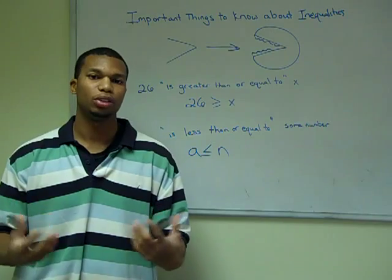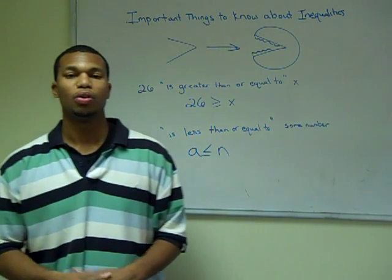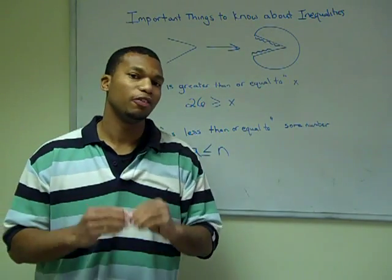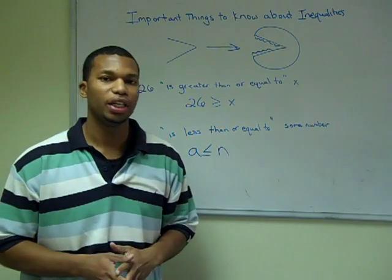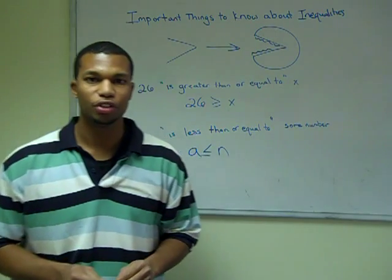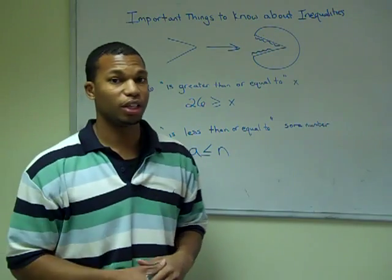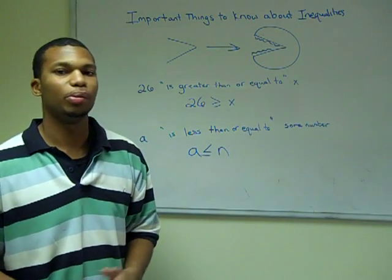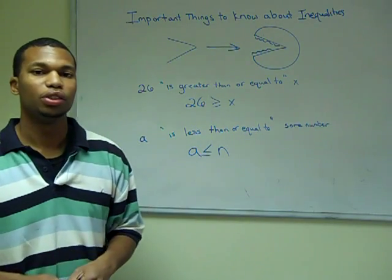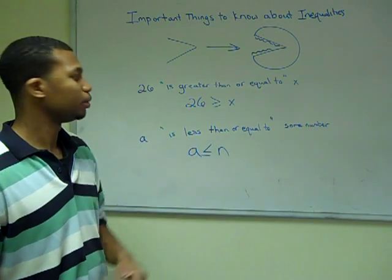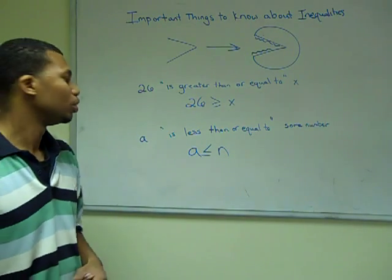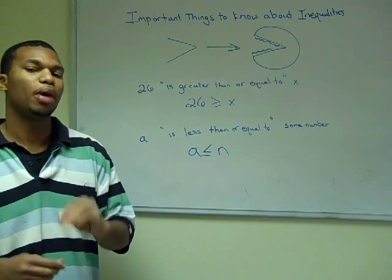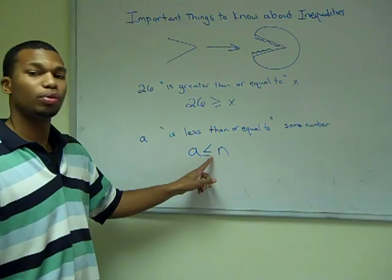Next we're going to look at how to place the mouth of the inequality. All of those symbols have a sort of mouth character. The mouth is always going to eat the greatest amount. It doesn't matter how the wording of the inequality is phrased — the mouth always points to the greatest amount. For example, if we say 26 is greater than or equal to X, we're suggesting 26 is the largest number, so the mouth points to 26. If we say A is less than or equal to some number, the mouth points to that number.